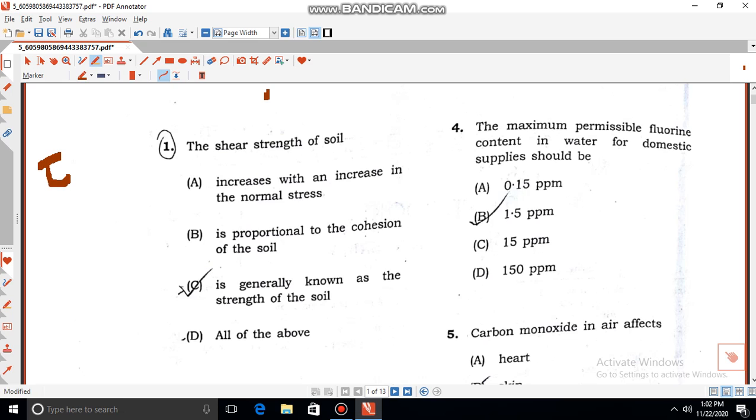The shear strength of soil is τ = c + σ tan φ, where c is cohesion, σ is normal stress, and φ is the internal angle. The first option states increase with an increase in the normal stress. See, the normal stress is σ. Once we increase the normal stress, then τ also increases. That means the first option is correct.